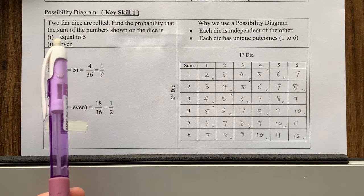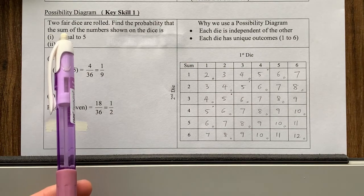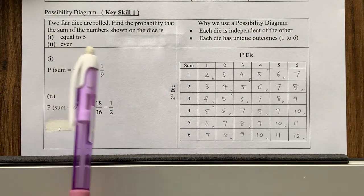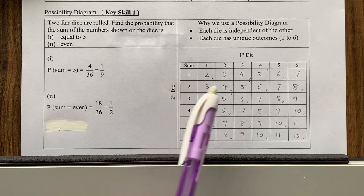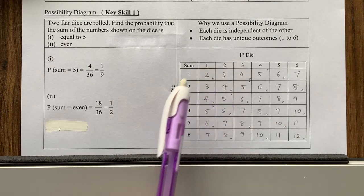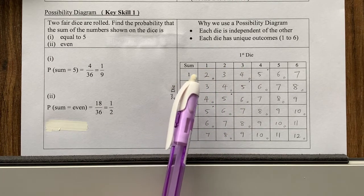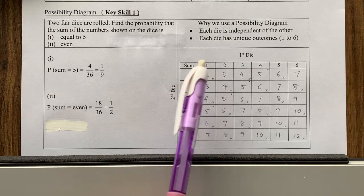And then you see that they asked for you to find the sum of the numbers that's shown. So for example, if the first die shows one, the second die also shows one, so the sum is two. So what I do is I take these two numbers plus together.